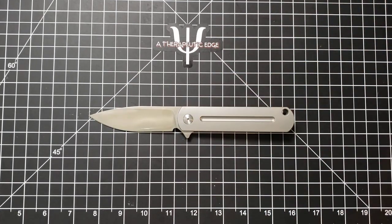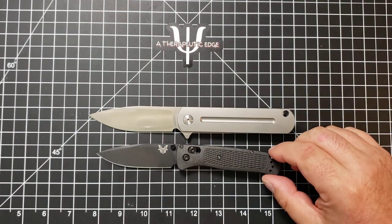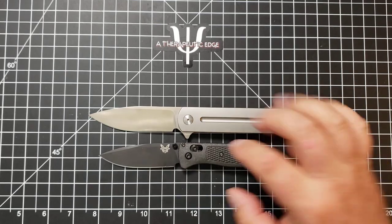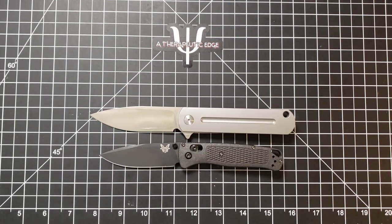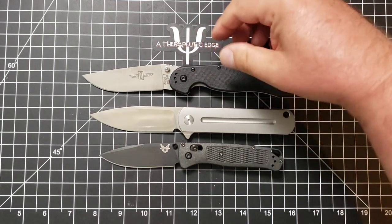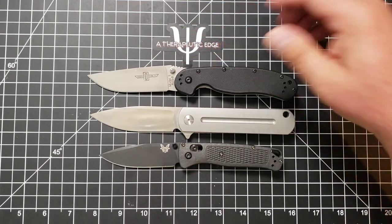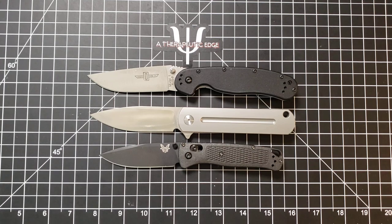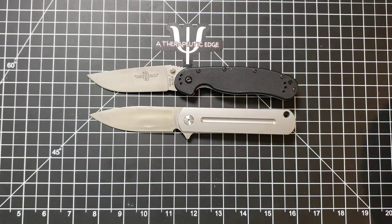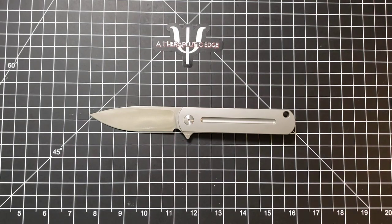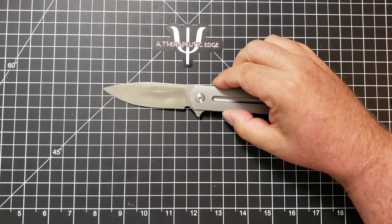Let's go ahead and do some size comparisons, just for fun. They have a similar blade profile, as you can see. Here it is against the Bugout. It is, of course, much larger than the Bugout. Here it is against the Rat Model 1. And it is just a little tiny bit shorter than the Rat 1. It is a really nice, full-size knife.